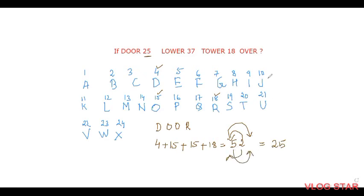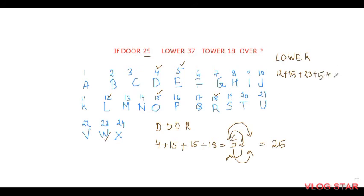Now let us verify LOWER. L = 12, O = 15, W = 23, E = 5, R = 18. Adding: 12 + 15 + 23 + 5 + 18 = 73. Reversing the digits: 73 becomes 37. That matches the given answer of 37!